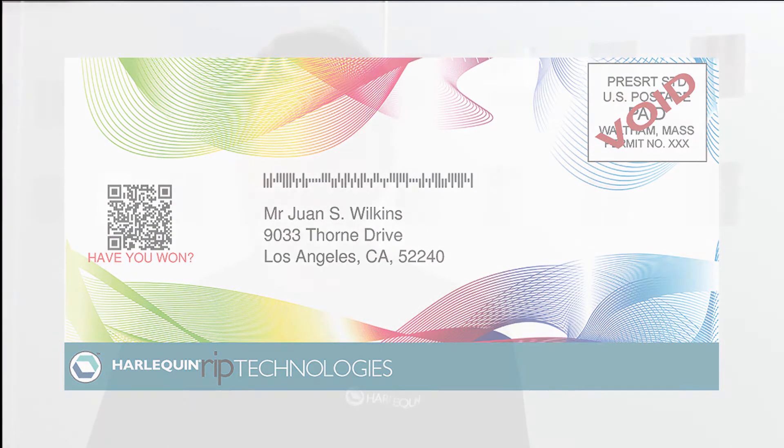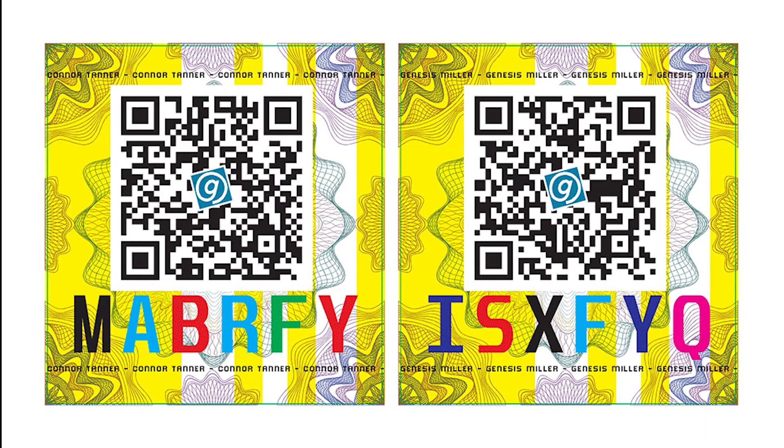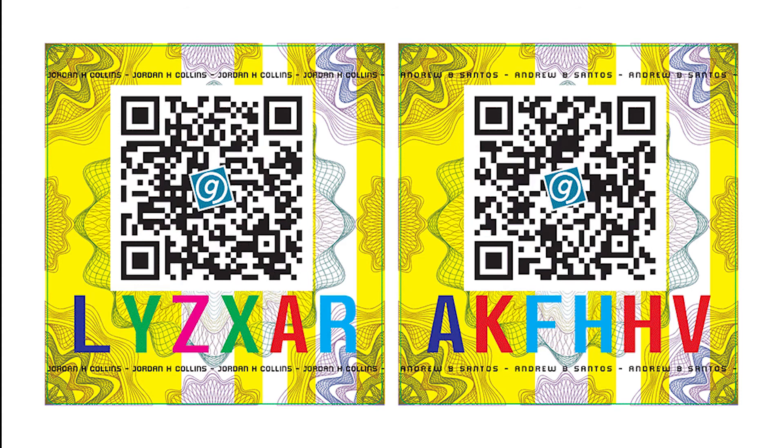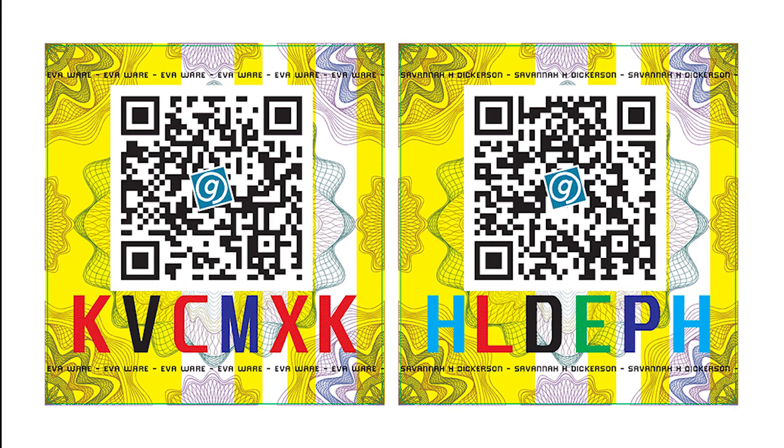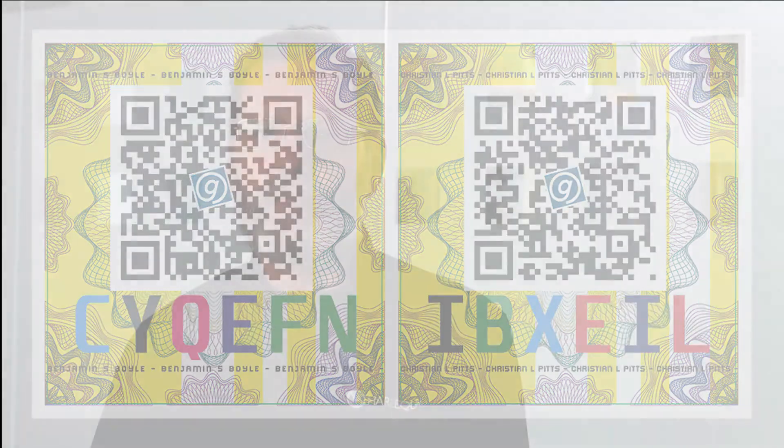This doesn't compete at all with the work we've done in the Harlequin VariData option to support optimized PDF and PDFVT files, but as I said it can be useful in lightweight environments. It allows you to take data from a CSV file and from automatic counters, and to overlay text, images, and barcodes on top of a PDF page background — and yes, that means there's a barcode generator in Harlequin 12.